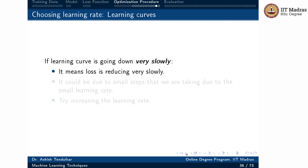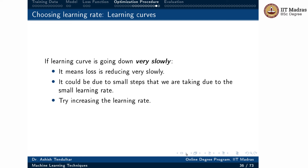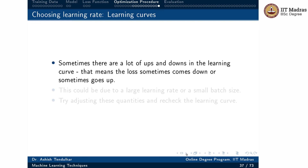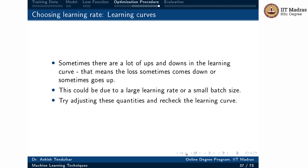If the learning curve is going down very slowly, the loss is reducing very slowly — this could be due to a small learning rate. In that case, we should increase the learning rate so that training can proceed faster. Sometimes there are many ups and downs in the learning curve — loss sometimes goes down and sometimes goes up — which could be due to a large learning rate or a small batch size. We should try adjusting these quantities, restart training, and recheck the learning curves.